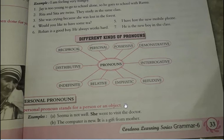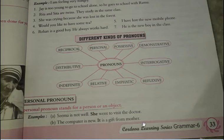Personal pronouns mean — kisi person ya object ko bujhaata hai. For example: Seima is not well, she went to visit the doctor. Here 'she' represents a person — Seima. Another example: The computer is new, it is a gift from mother. Here 'it' refers to an object — the computer. It means the computer is a gift from mother.